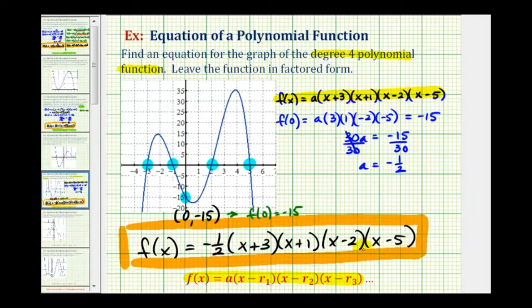Notice if we multiply this out, the leading coefficient would be negative, and it's a degree four polynomial function. So notice as we move to the left and right, the function is going down, approaching negative infinity in both directions, which is what we expect with an even degree and a negative leading coefficient. I hope you found this helpful. We'll take a look at another example in the next video.